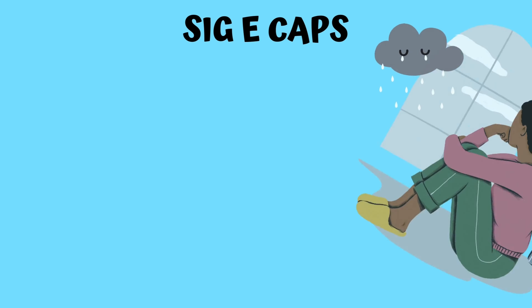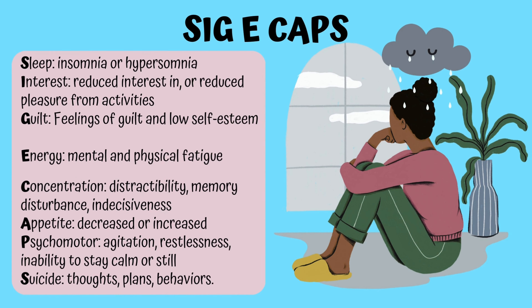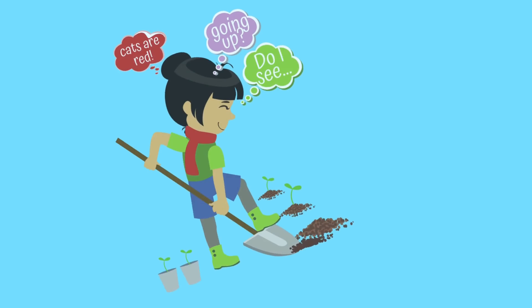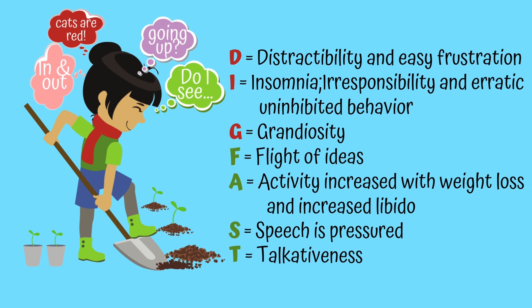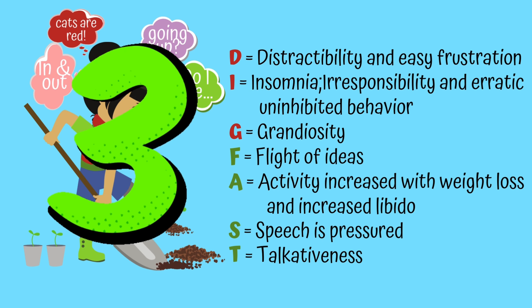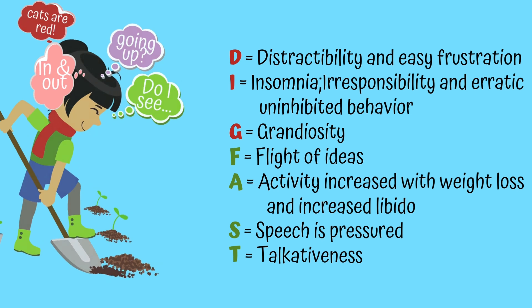Know your SIG E CAPS for depression — five of these means depression. The other mnemonic is DIG FAST for bipolar: Distracted, Insomnia, Grandiosity, Flight of ideas, Activity, Pressured speech, and Thoughtfulness. Three of these are needed to qualify for bipolar.